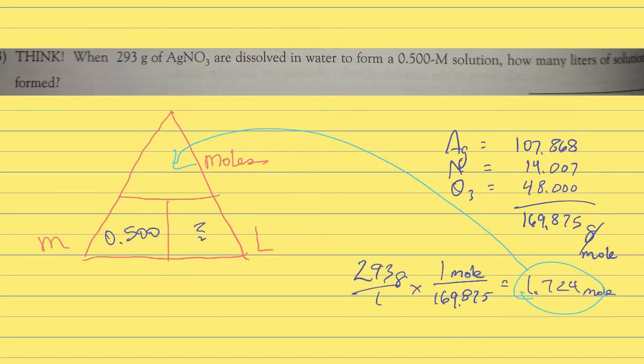Let's look at the next one. This one is called a think problem. It says: When 293 grams of silver nitrate (AgNO₃) are dissolved in water to form a 0.5 M solution, how many liters of solution are formed?